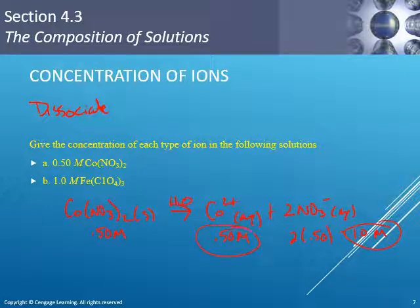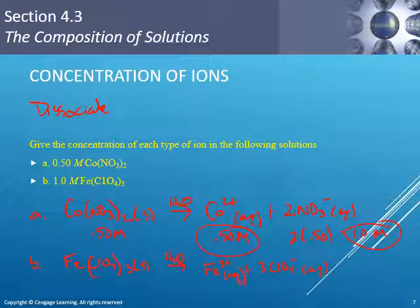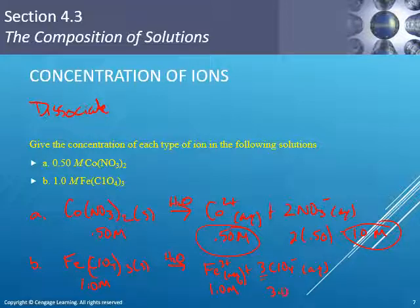For the second example, Fe(ClO4)3 as a solid placed into water forms Fe3+ and 3 ClO4⁻ ions, each aqueous. Starting with an initial concentration of 1.00 M, the Fe3+ concentration is 1.00 M in a 1:1 ratio, and the perchlorate ion has a coefficient of 3, giving 3.0 M for ClO4⁻.